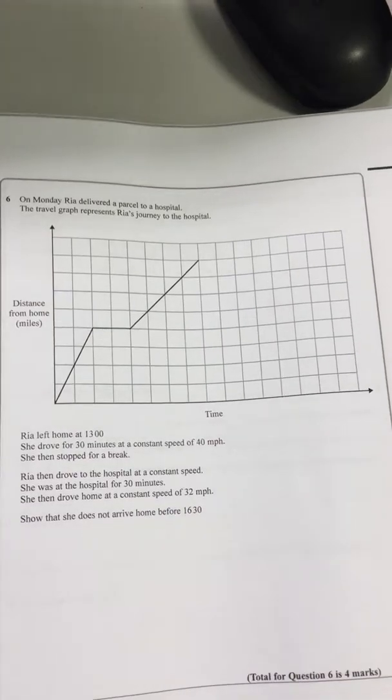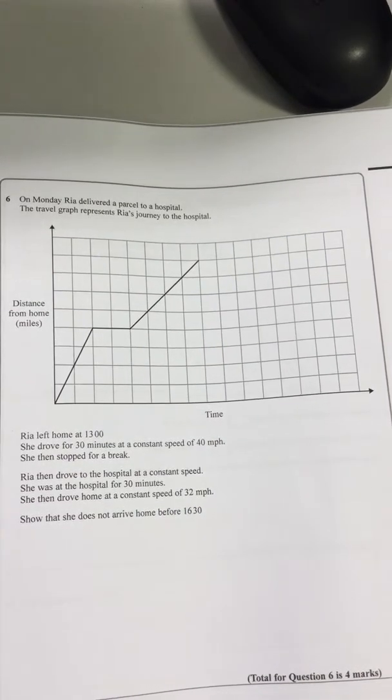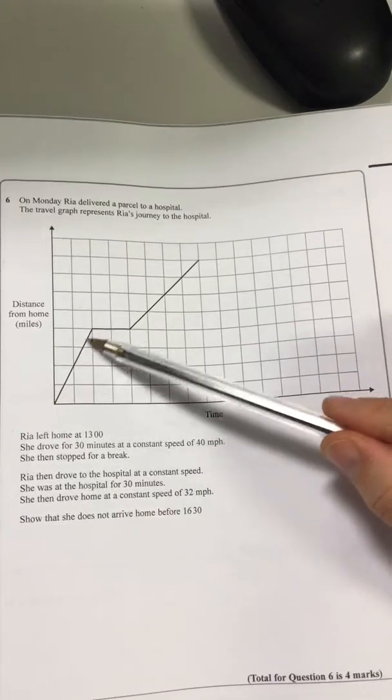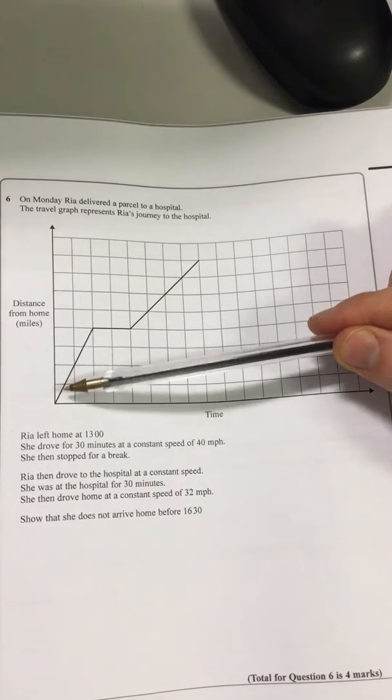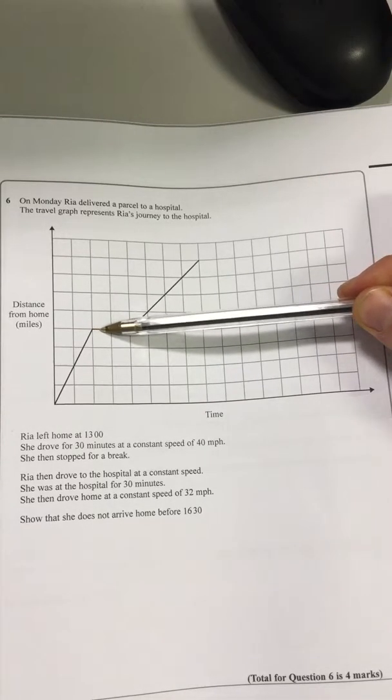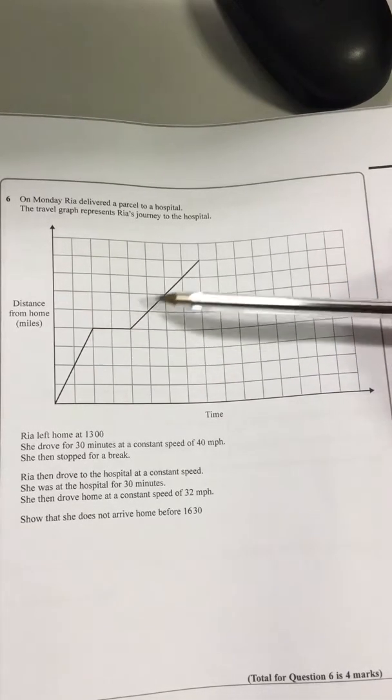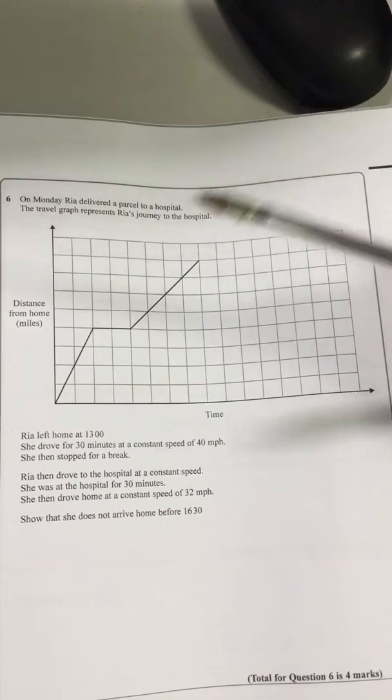On Monday, Ria delivered a parcel to a hospital. The travel graph represents Ria's journey to the hospital. So if you've got a diagonal line, there's some traveling going on. If you've got a stationary line, that means they're not going any further away from their house, so they're just staying still somewhere here. They're still somewhere there, and then they're speeding off somewhere else there.